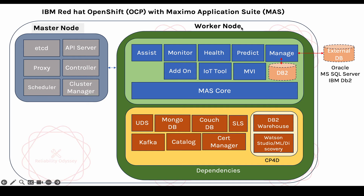Focusing on the worker node, there are two particular things you will see. First are the different dependencies — certain things required for Maximo Application Suite to perform its job. The components are: UDS, MongoDB, CouchDB, SLS, Kafka, the catalog, and the cert manager.